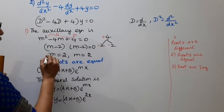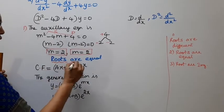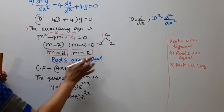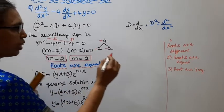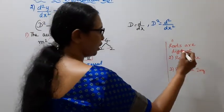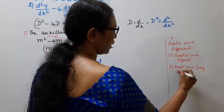Therefore m = 2, m = 2. The two roots are equal. When roots are equal, we find the complementary function. The cases are: roots are different, roots are equal, or roots are complex imaginary.